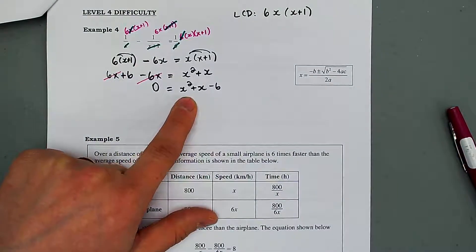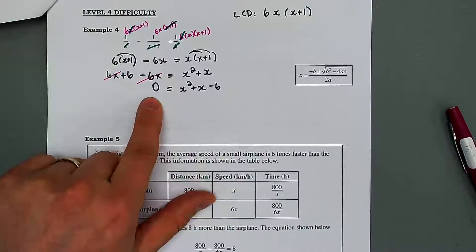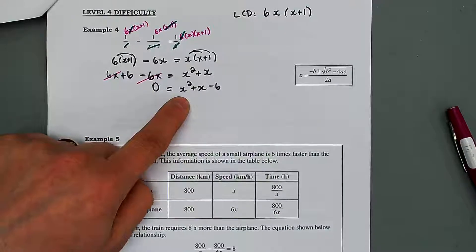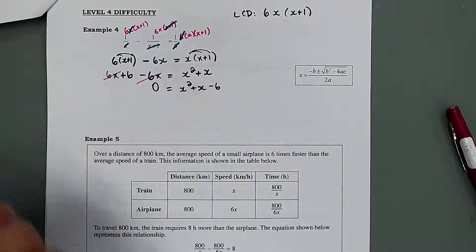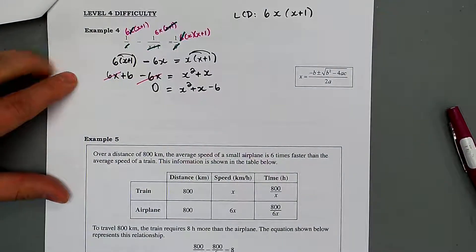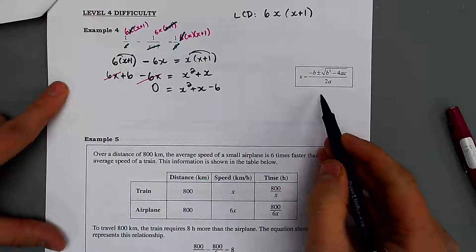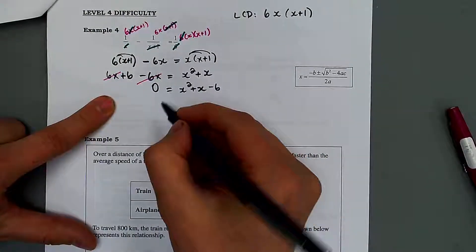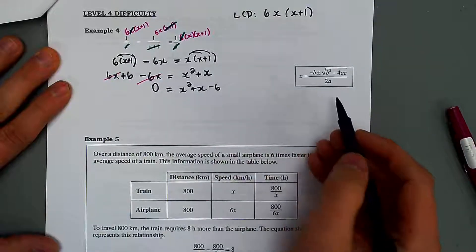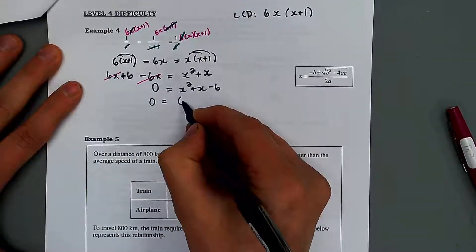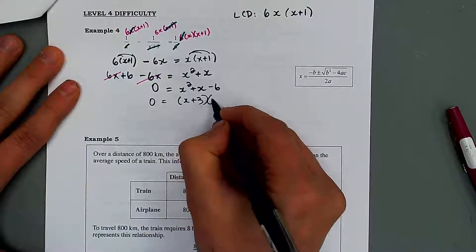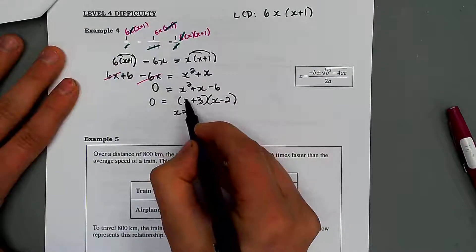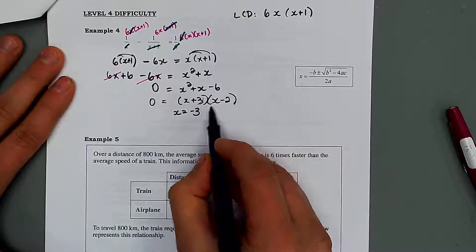For the first time in this course we have a trinomial that equals 0. This is why we factored at the beginning of class — only when solving rational equations will we potentially need to factor a trinomial. Factoring x² plus x minus 6 gives x plus 3 times x minus 2. This equals 0 when x is negative 3 or when x is 2.